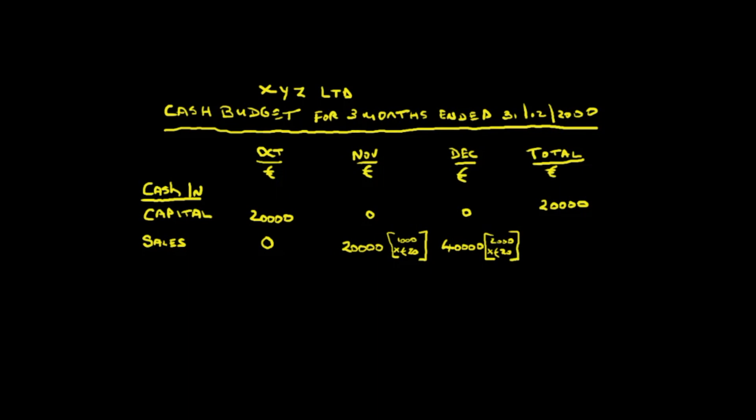What about December sales? In December we said we're going to sell 3,000 items at 20 euros each — that's 60,000. But the cash won't come in until January of next year. We're only doing a cash budget for these three months, so the only cash coming in is the 20,000 in November and the 40,000 in December. At the end of December, our customers will owe us for the 3,000 items sold in December — that's 60,000 — but that cash will not have been received.